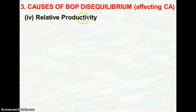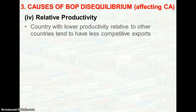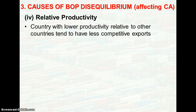The next point is relative productivity. Given a country with poorer skills of the workforce, inferior technology, and inefficiency, the country's exports become less competitive to other countries. This will lead to a decrease in their exports and could worsen the country's current account, eventually leading to a balance of payment deficit.